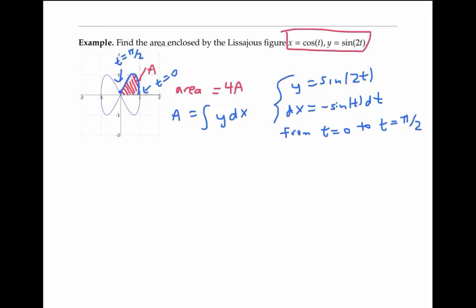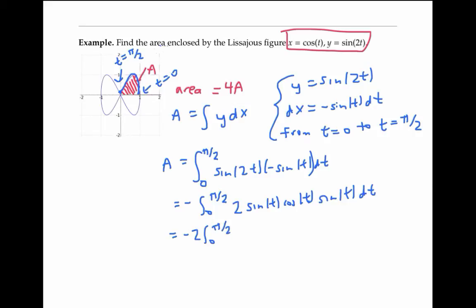Plugging this information into our equation, we get that the area is the integral from zero to pi over two of sine of two t times negative sine of t dt. Let's pull the negative sign out and use the double angle formula to rewrite sine of two t as two sine t cosine t, multiply that by the sine t dt. We can pull the two out and rewrite this as sine squared of t cosine t dt.